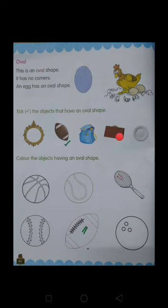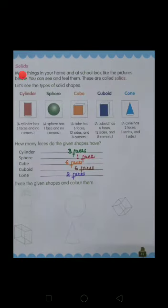So here, tell which objects have oval shape and color them. Now, solids on page 41.